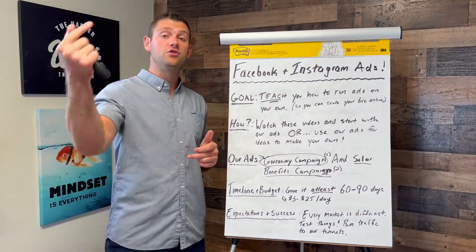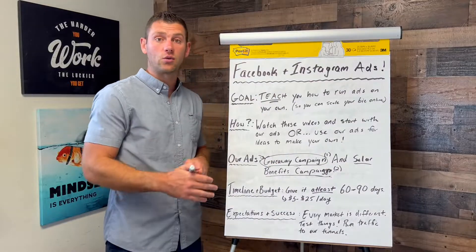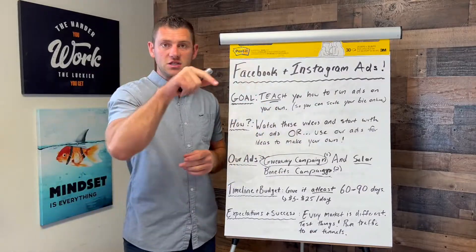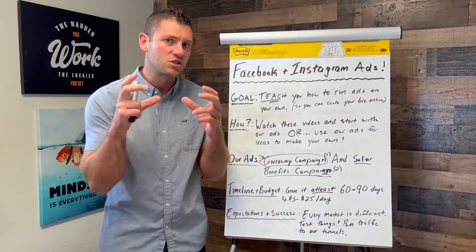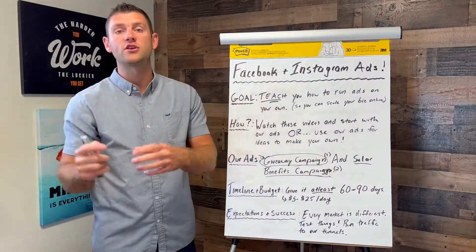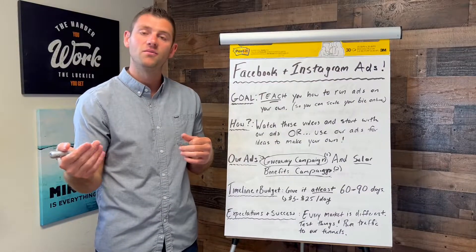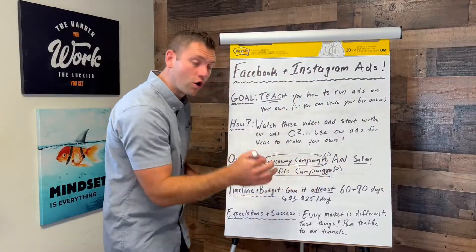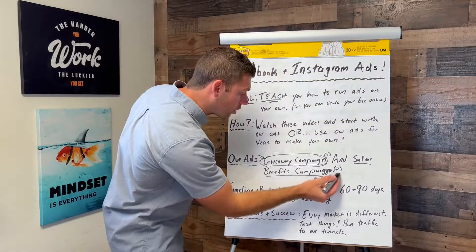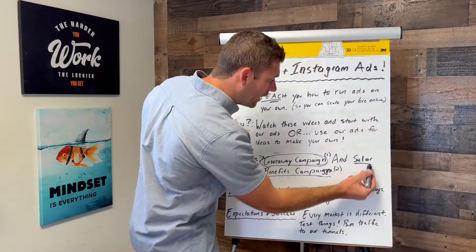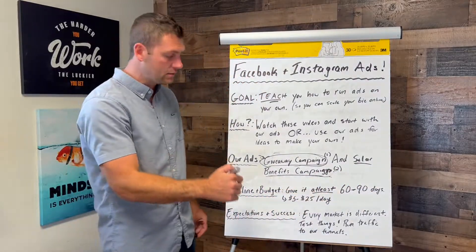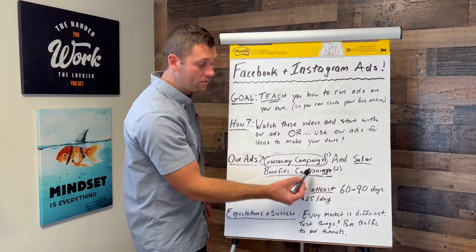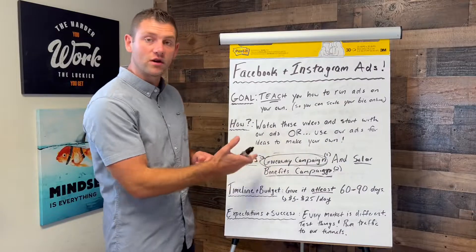That's the giveaway campaign. Now for the solar benefits campaign — scroll below or click the link in the description. This one is much more targeted. We're incentivizing people off of the solar benefits directly. You might say something like: 'Are you curious how much the sun will actually save you on your monthly electric bill? Fill out this form to see how much you can save.' You send that person to your solar savings calculator funnel. People who enter this campaign are obviously more qualified, but you're going to spend more money per lead.